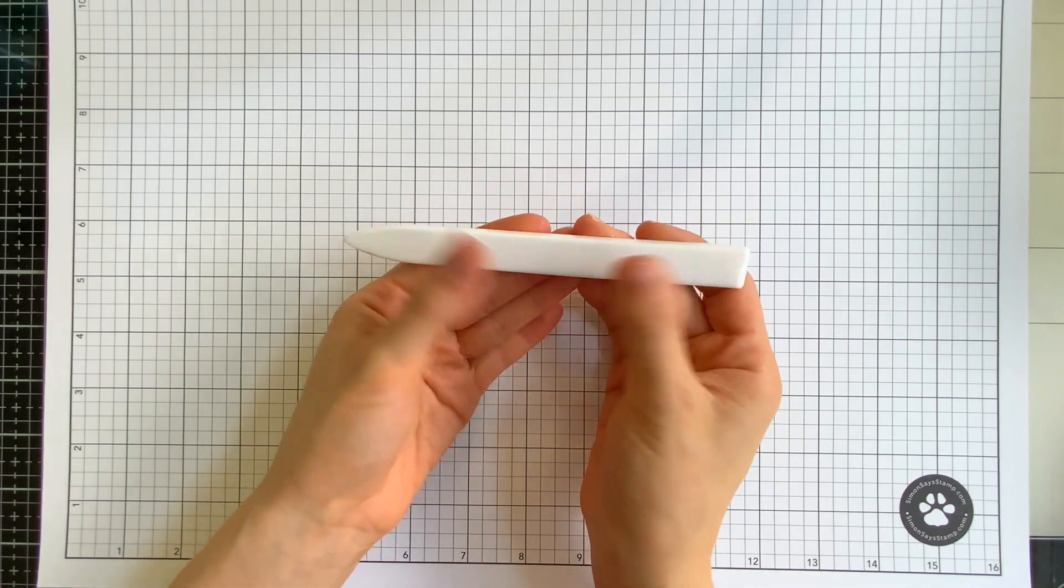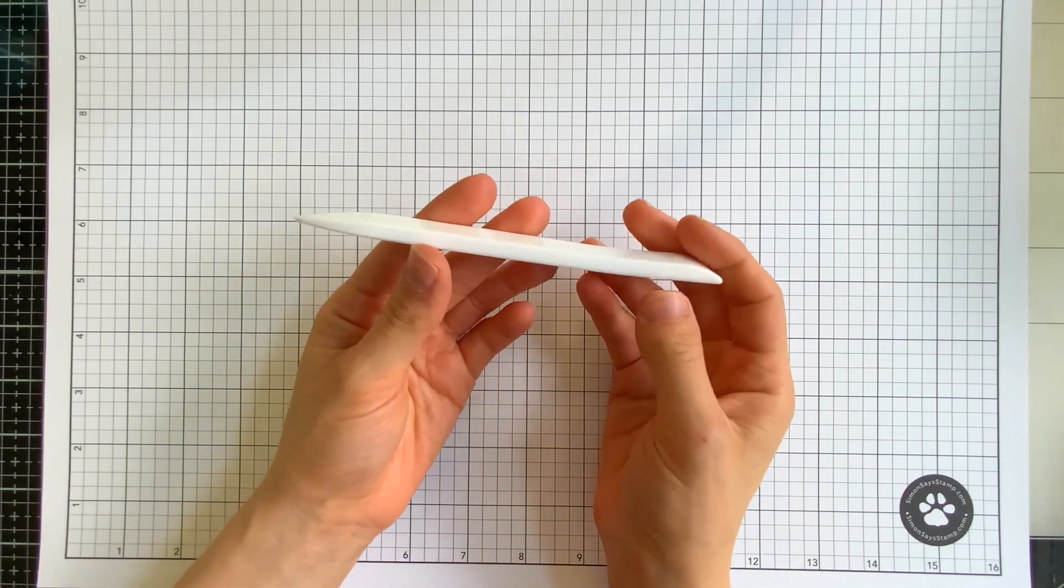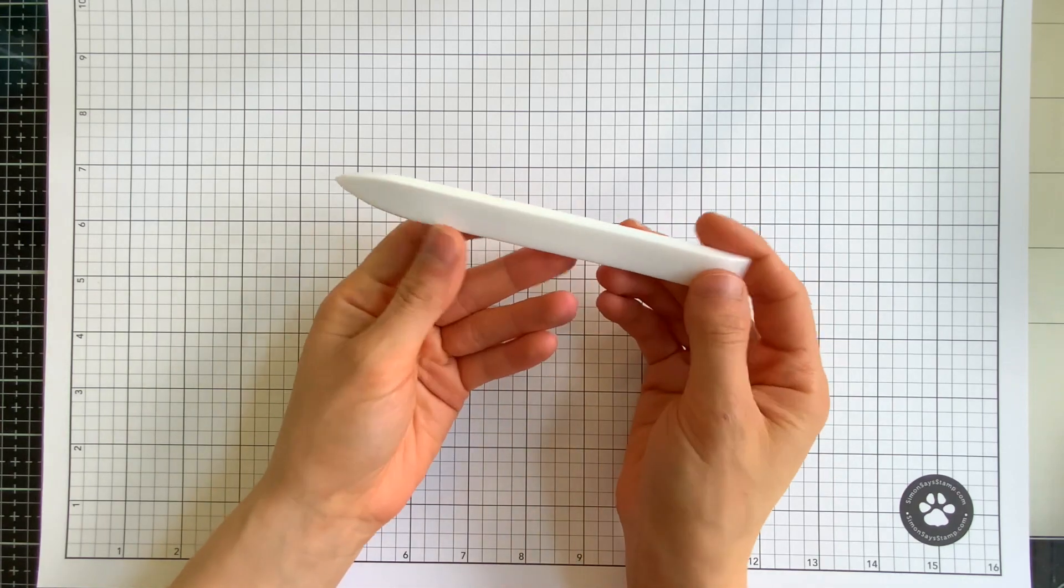It won't get worn down, discolored, or stained with age. Instead your bone folder will only get smoother and shinier as time goes on.